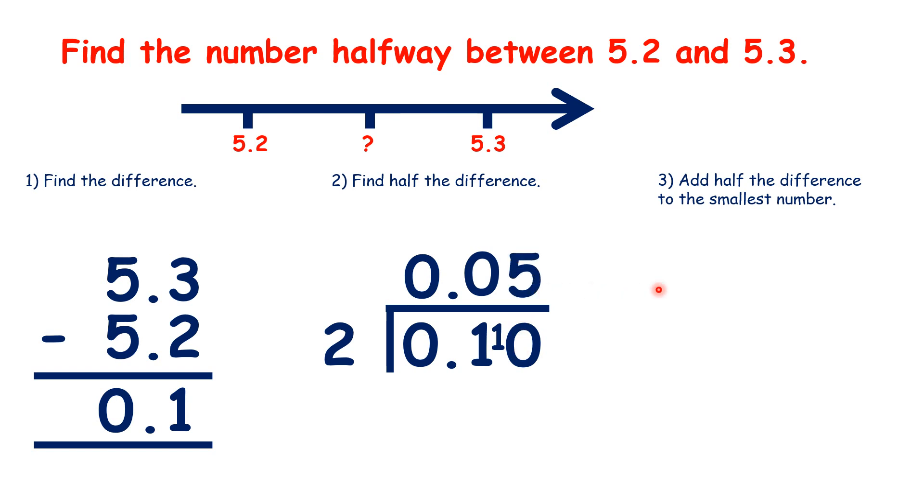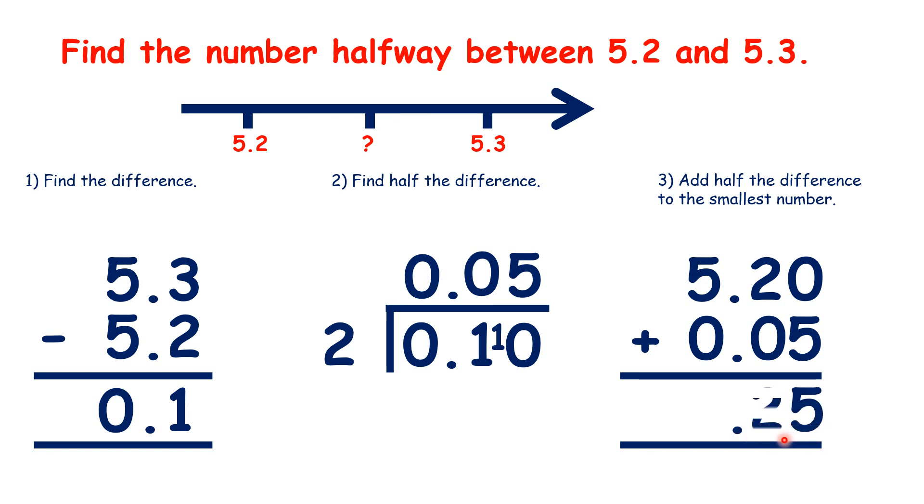So now, we take our smallest number, and we're adding half the difference. We can write 0 in our empty place value column. We write the decimal point in our answer. Then we add as normal to get our answer, 5.25.